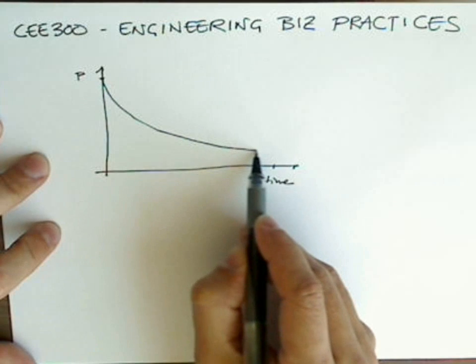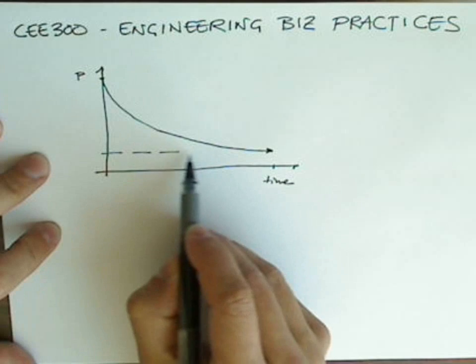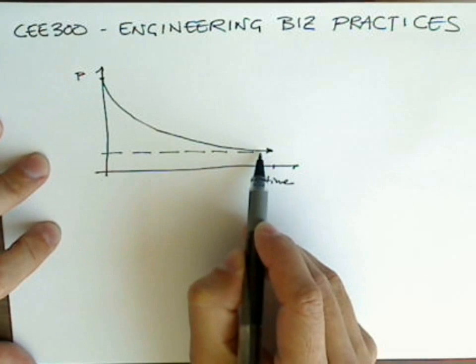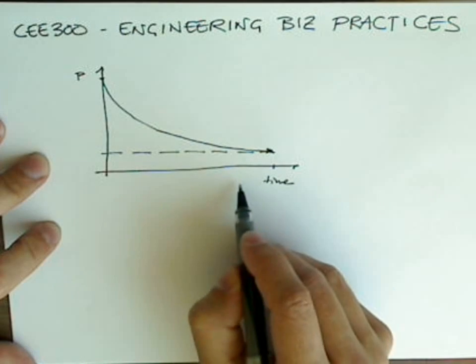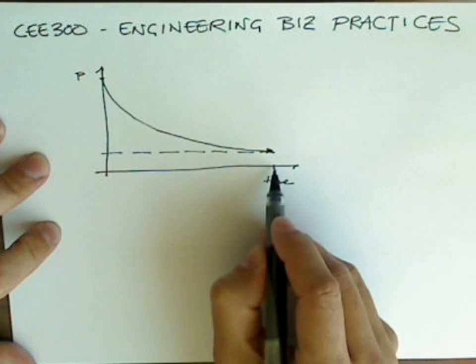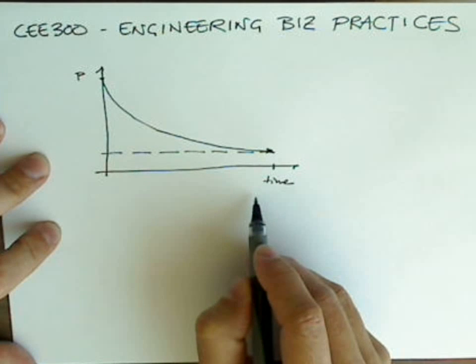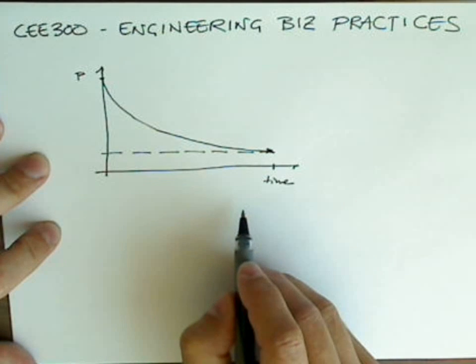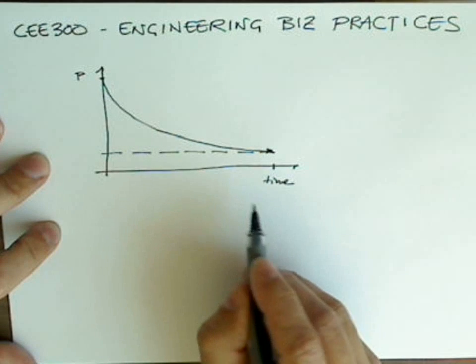These are called depreciating assets. Ultimately, they arrive at some value at which they're no longer useful. That doesn't mean that they don't have market value, but this time axis has some terminus which we would say that's the end of the life of the good. At some point, your car is no longer economical to operate or it just doesn't work.